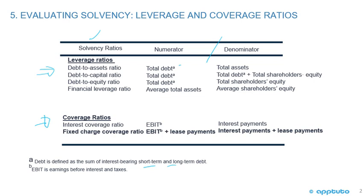Debt to capital: numerator is total debt, denominator is total debt plus total shareholders' equity. Debt-to-equity ratio: numerator is total debt, denominator is total shareholders' equity. And the financial leverage ratio — you should recall that from the DuPont — is average total assets over average equity.